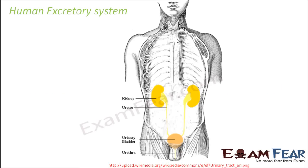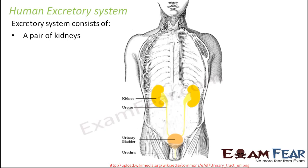This is how the human excretory system looks. It is not just one specialized organ — a set of organs together form the human excretory system. The excretory system consists of the following organs: a pair of kidneys, as you can see here — one and two.